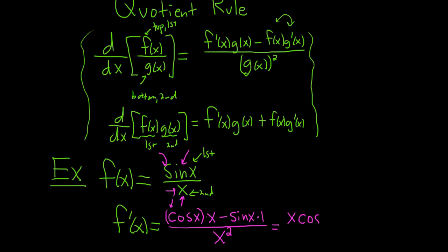Typically, you put the x in front of the cosine function so that there's no confusion between these x's here. Minus, and sine x times 1 is simply sine x. That's all being divided by x squared. And that is the final answer.